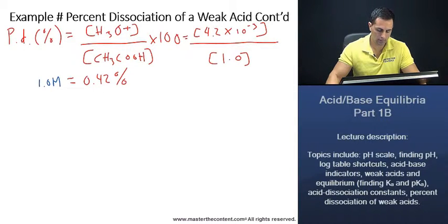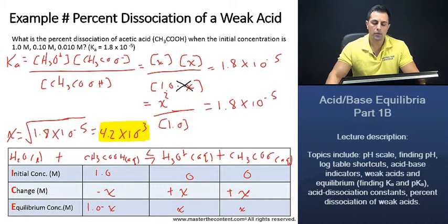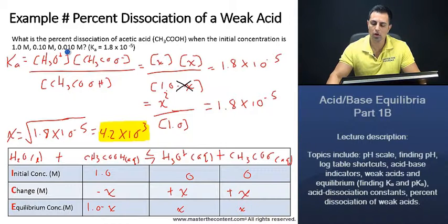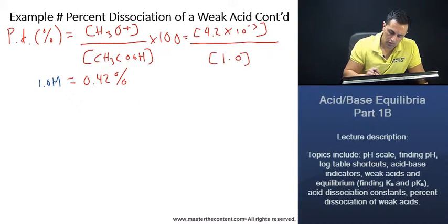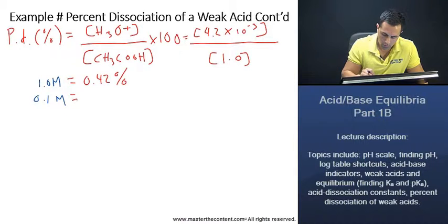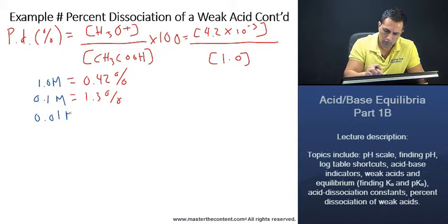For the 0.1 molar and 0.01 molar solutions, all you do is change the initial concentration in the x squared over initial concentration expression and solve from there. When you do that, you get a percent dissociation of 1.3% for the 0.1 molar solution, and 4.2% for the 0.01 molar solution.